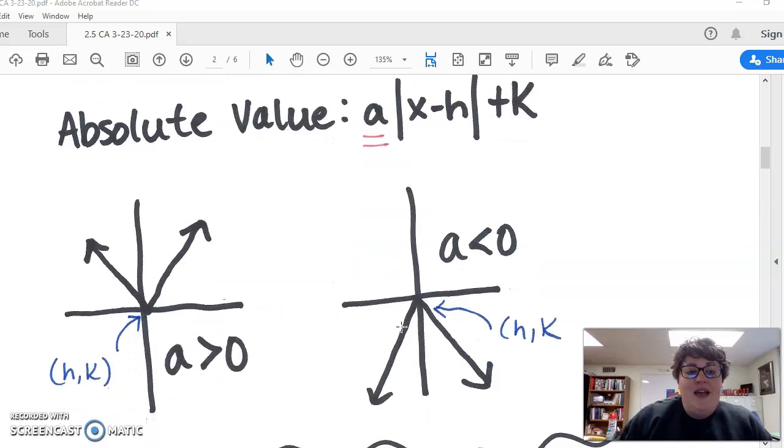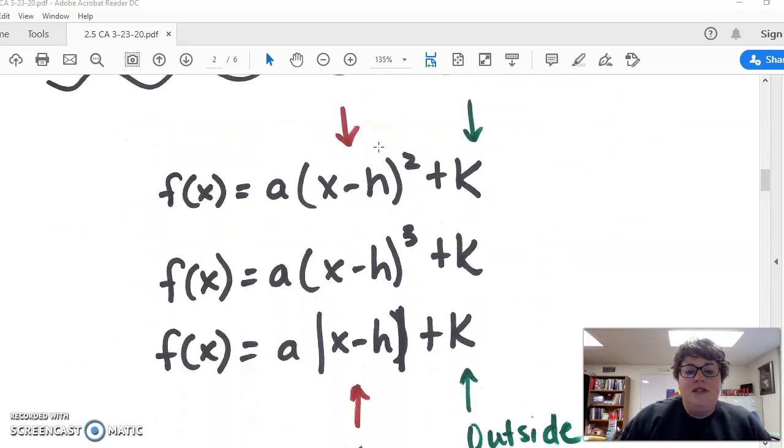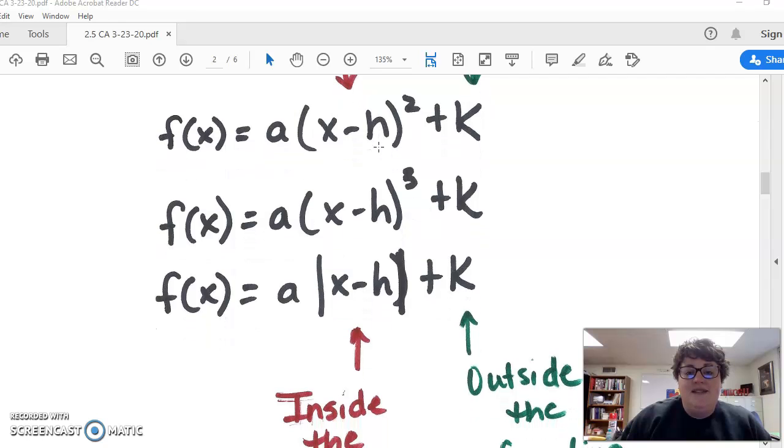Next is absolute value. With absolute value, A again determines the direction of the graph. If it's positive, it's going up; if negative, it's going down. You still have your H and K. Let me review what's considered the inside versus the outside of the graph. The inside is the x minus h portion—the h is always the opposite sign, just like we did with circles. The k is the outside portion, and you go with the sign. So it's opposite of the inside, same sign as the outside.